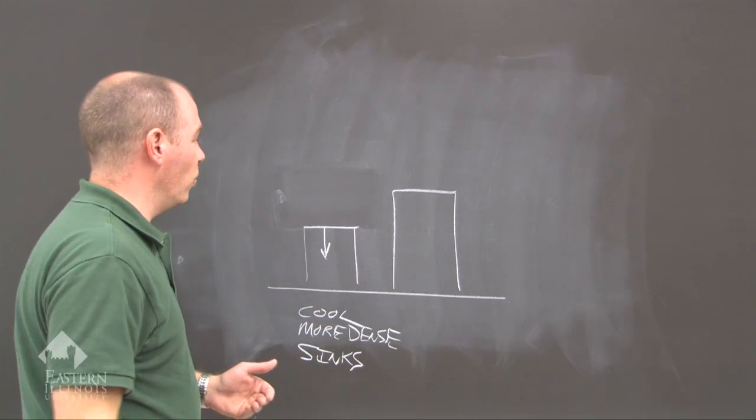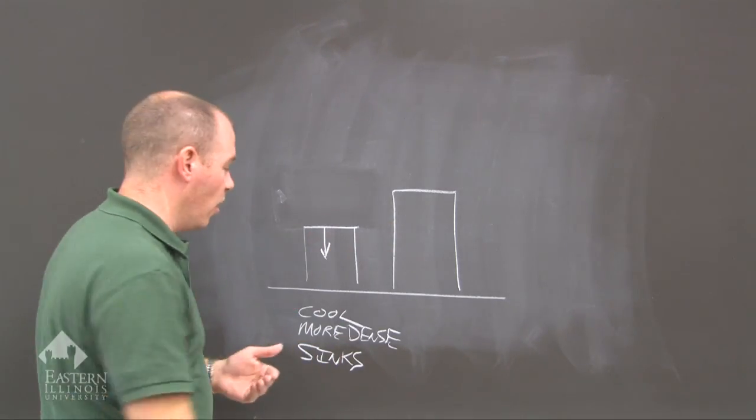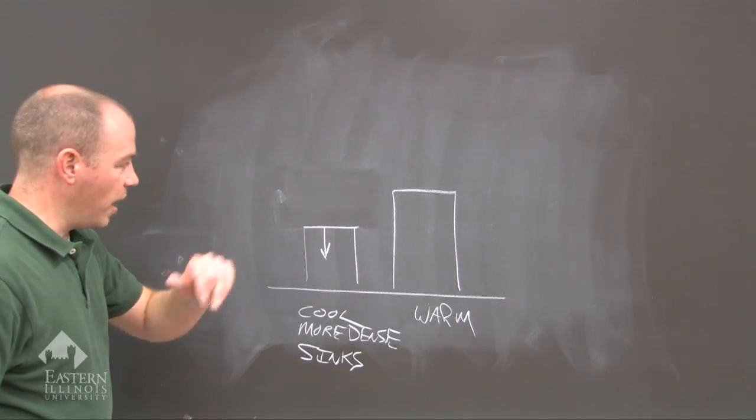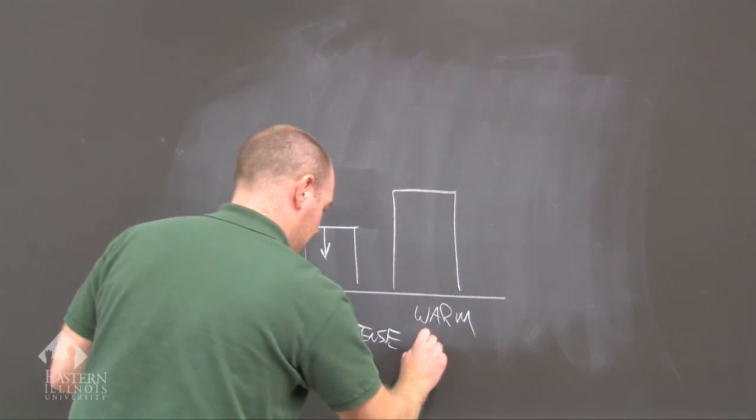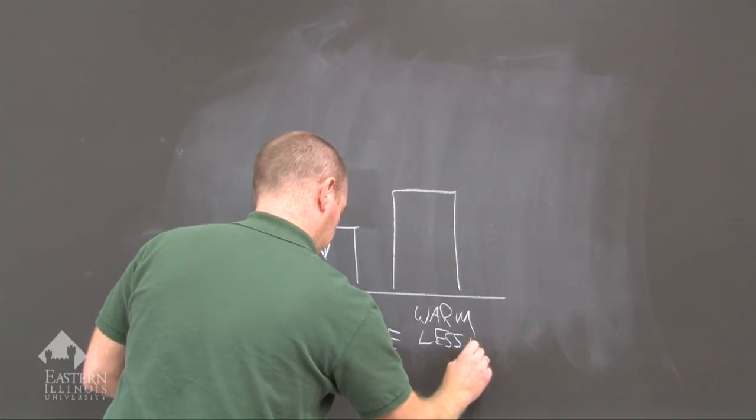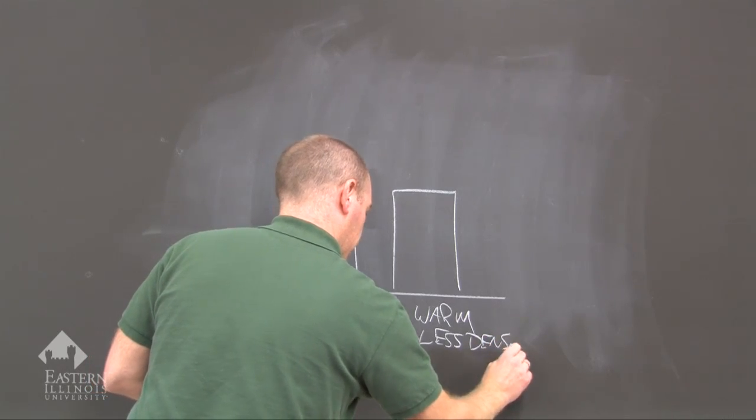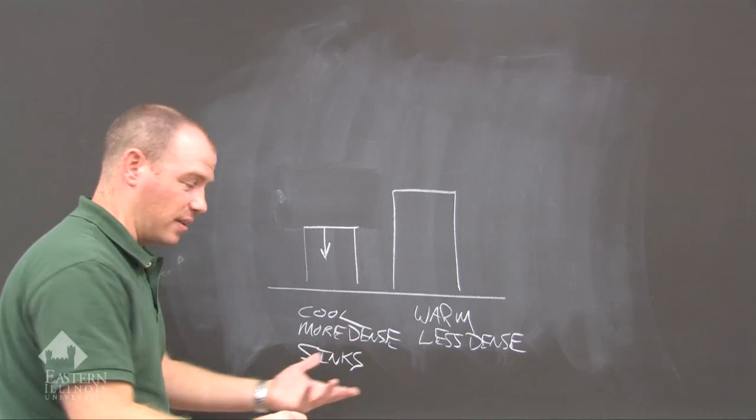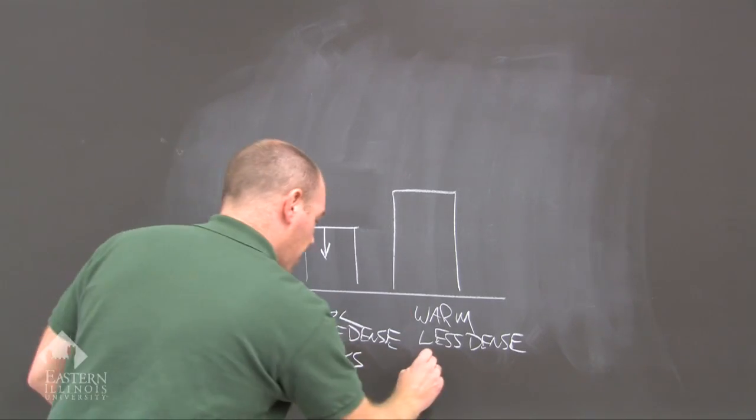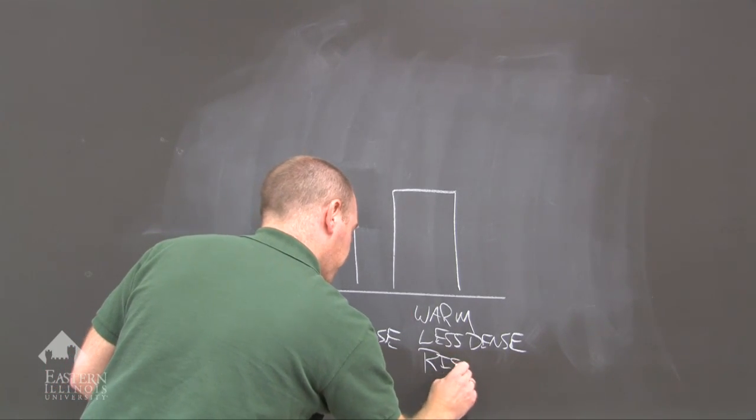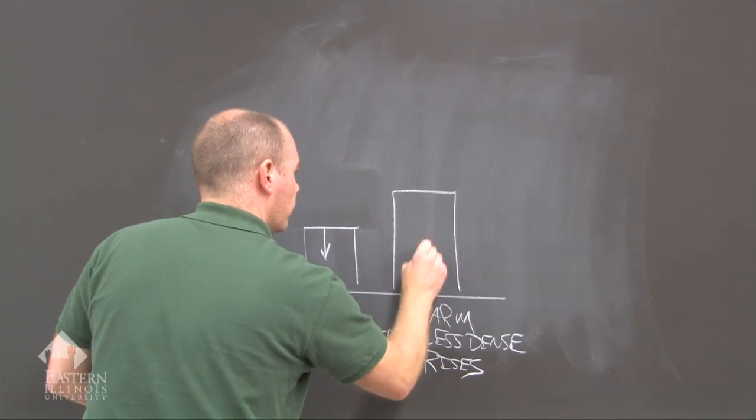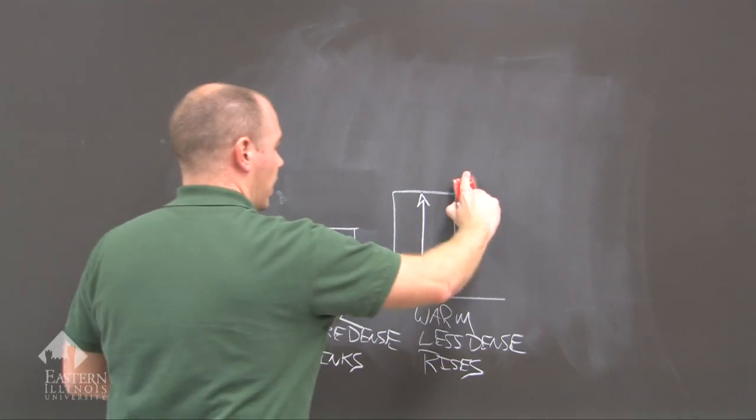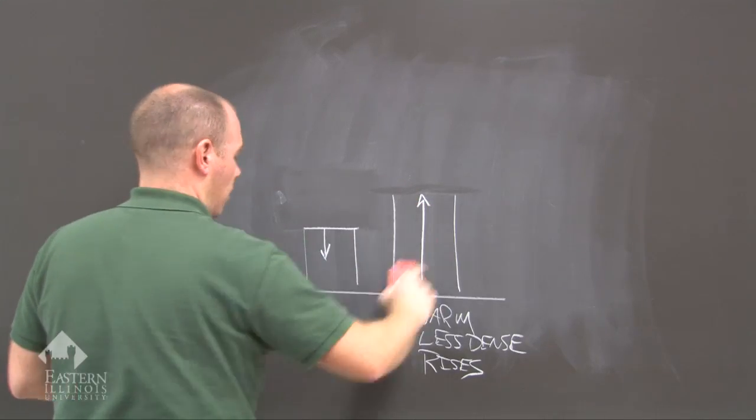On the other hand, we have this column of air. We are going to warm it up. It becomes less dense and has a rising effect. Warm air rises. A hot air balloon rises, so it rises from the surface. And instead of the original column of air, we get a taller column of air.